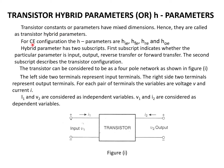For example, for the CE configuration of the transistor, the H-parameters are HIE, HFE, HRE, and HOE. These four are the H-parameters of a transistor in CE configuration.